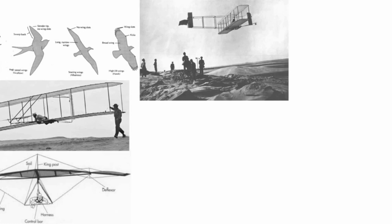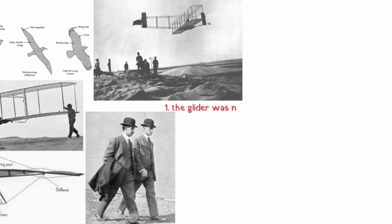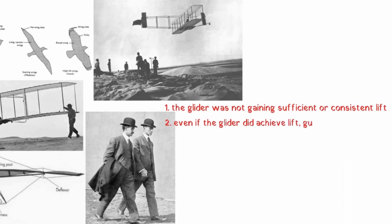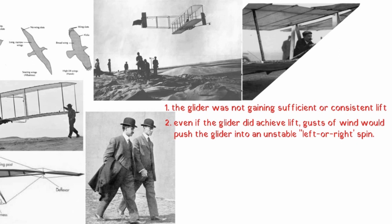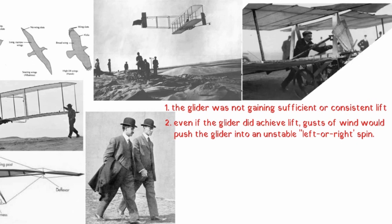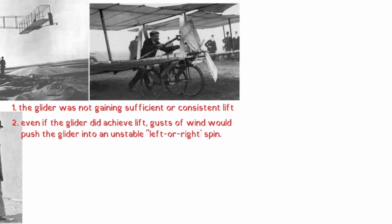The double-decker wing structure of their experimental glider was based on Octave Chanute's hang gliding flight experiment in 1896, and Chanute himself became a mentor of sorts to the brothers. The glider's wing-warping worked as intended, but two major faults threatened success. First, the glider was not gaining sufficient or consistent lift. Second, gusts of wind pushed the glider into an unstable spin. By adding a moving rudder to their glider's tail, the Wright brothers found that whenever the wings warped, the controls simultaneously operated the rudder, which balanced the glider's bank — a principle most modern airplanes follow.